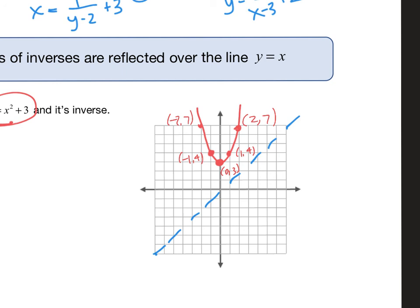The easiest way to get this to be its inverse is to switch each of those ordered pairs. So like this one will become (7,2), this will become (4,1), this will become (3,0), this will become (4,-1), this will become (7,-2), and there is the inverse.